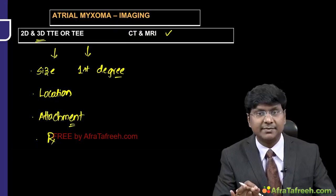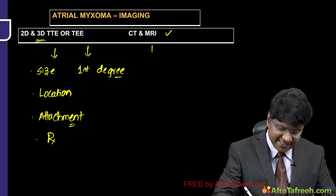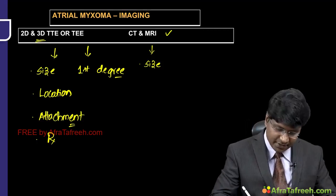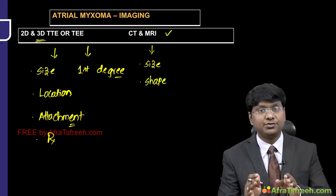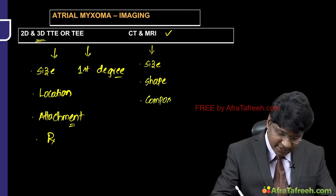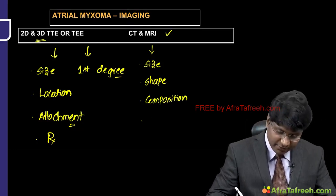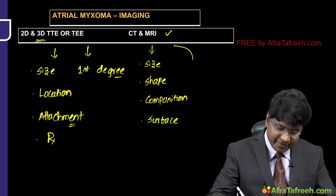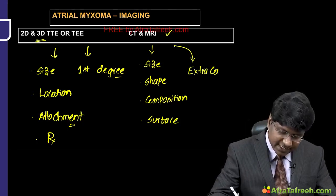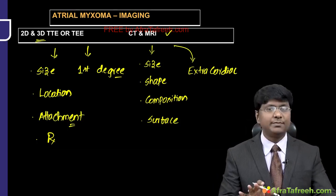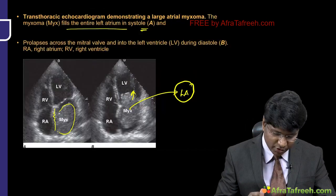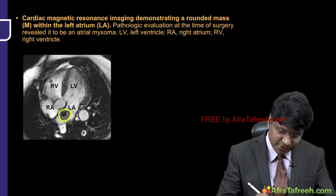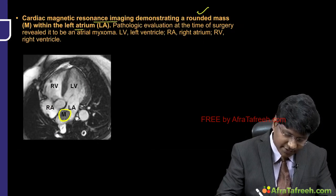CT and MRA can clearly measure tumor size and determine shape, composition, and surface composition, as well as identify extracardiac involvement. A cardiac MRI image demonstrates a round mass within the left atrium.